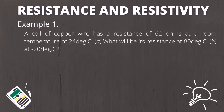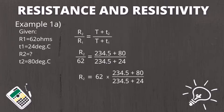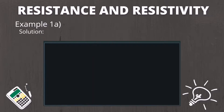Example number one: a coil of copper wire has a resistance of 62 ohms at room temperature of 24 degrees Celsius. (a) What will be its resistance at 80 degrees Celsius? Using the formula R2 over R1 equals constant T plus T2 over constant T plus T1, and noting that the inferred absolute temperature of copper is 234.5 degrees Celsius, we get R2 equals 62 times (234.5 plus 80) over (234.5 plus 24). Using the calculator, the result is 75.5 ohms.